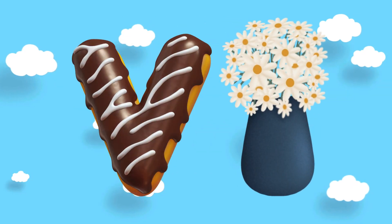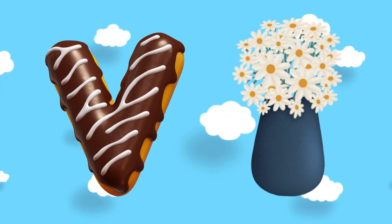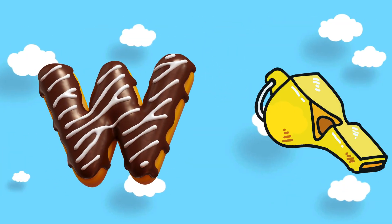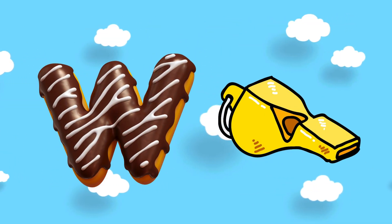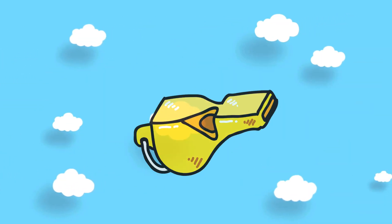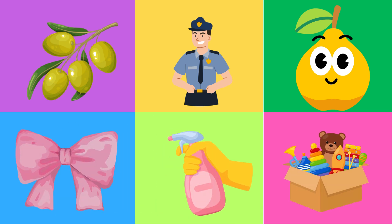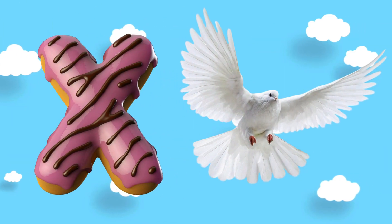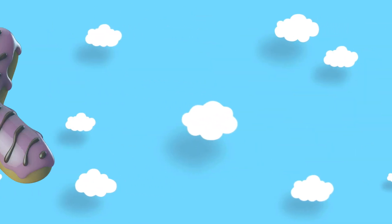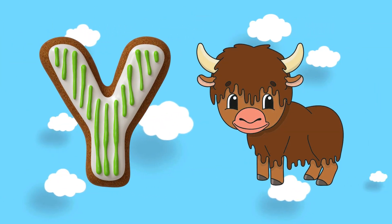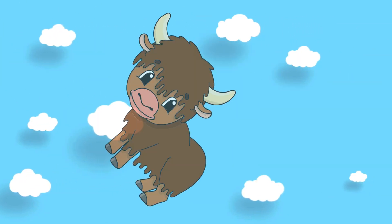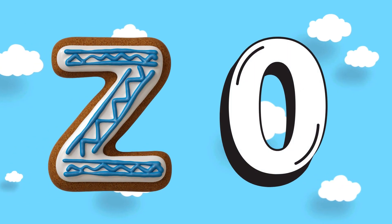V is for fozzy, W is for whistle, X is for xenops, Y is for yak, Z is for zero.